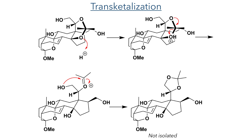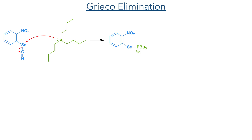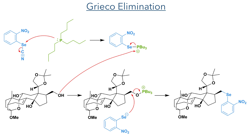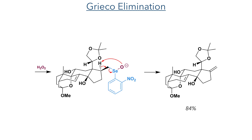This compound was not isolated and was taken forward to the Grieco elimination. This reaction uses nitrophenyl selenyl cyanate which is reacted with tributylphosphine, acting as a nucleophile to form a selenide. The more nucleophilic primary hydroxyl group attacks this phosphorus species, eliminating selenide which then adds to the carbon bonded to the oxygen, eliminated to form a phosphine oxide together with the organoselenide. This is then reacted with hydrogen peroxide to form a selene oxide, which undergoes an intramolecular elimination to abstract a proton and form the exo-alkene.